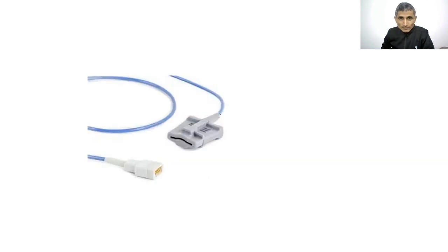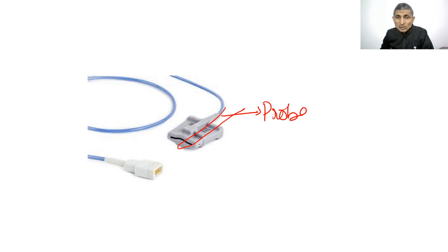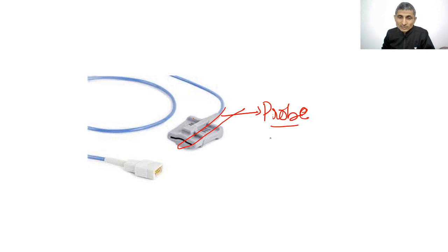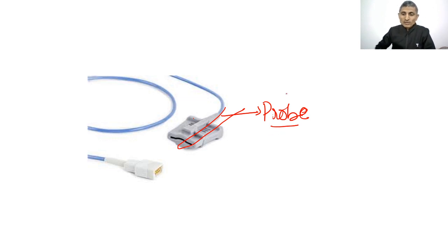This is a probe of the pulse oximeter. The finger is inserted into this part and oxygen saturation of arterial blood is measured. The pulse oximeter senses only the pulsatile blood, which is why it measures arterial oxygen saturation.